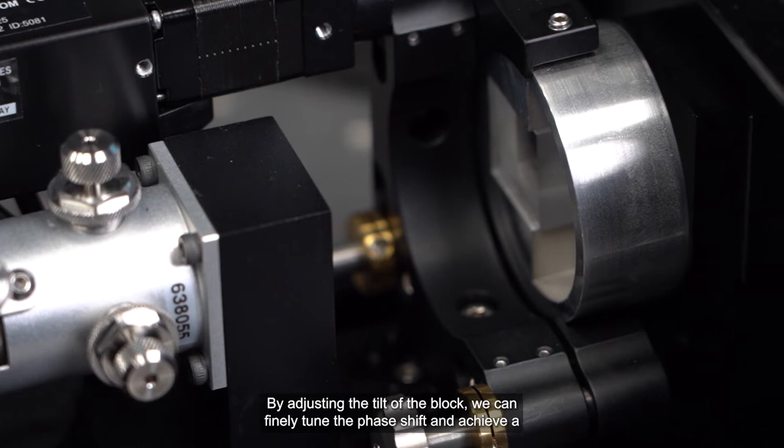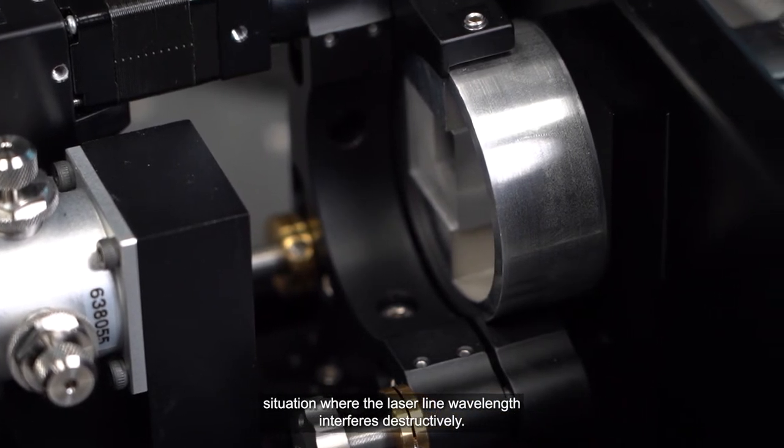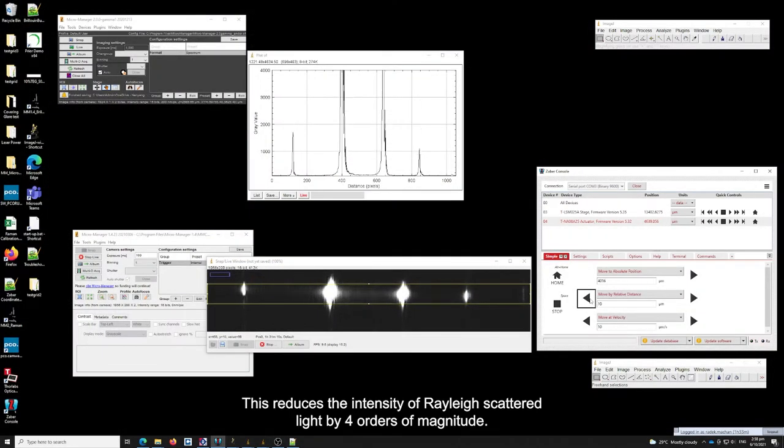By adjusting the tilt of the block, we can finely tune the phase shift and achieve a situation where the laser-like wavelength interferes destructively. This reduces the intensity of Rayleigh scattered light by four orders of magnitude.